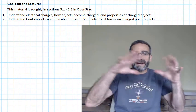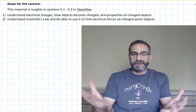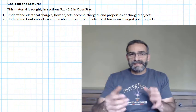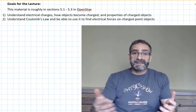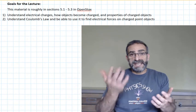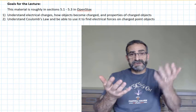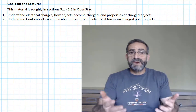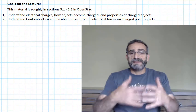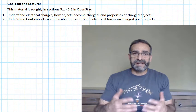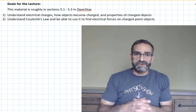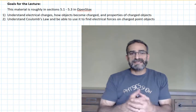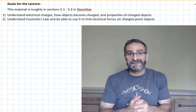The electrons form a cloud around the outside of the atom. Now, most of the time we have the same number of protons and electrons — the same number of positives and negatives. So most of the time we're dealing with objects that are electrically neutral, and they don't interact very strongly because of that.